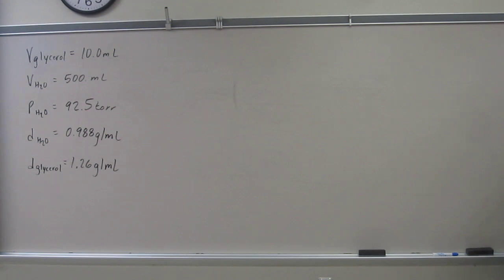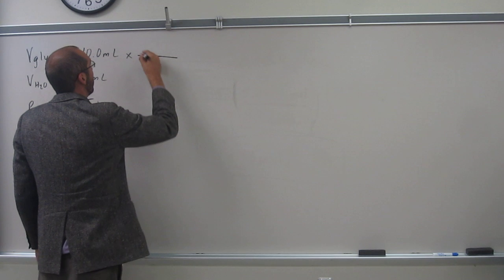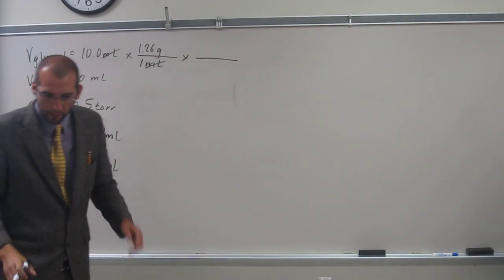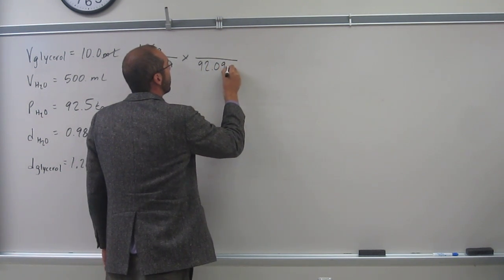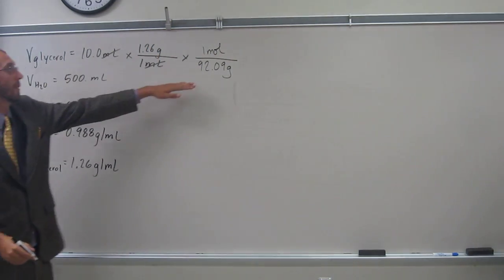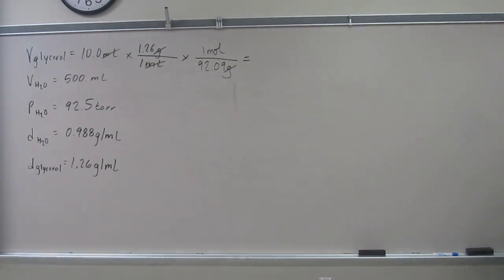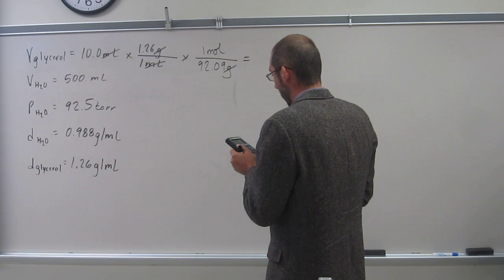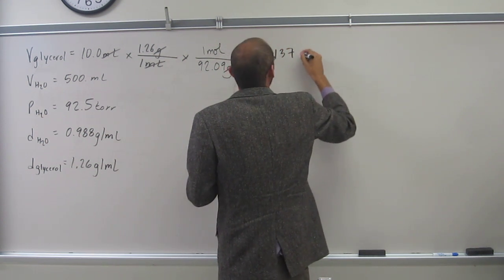I calculated the molar mass of glycerol earlier. So glycerol here, 10 mils of it, times 1.26 grams per one mil, so that's going to cancel. And then 92.09 grams per one mole of glycerol. So this is the molar mass of glycerol. Cancel, cancel. Okay, so 10 times 1.26 divided by 92.09, that gives us 0.137 moles.